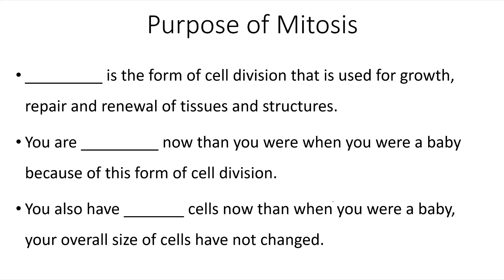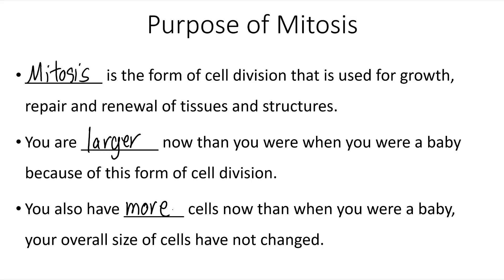So let's talk about cell division. The purpose of mitosis: mitosis is the form of cell division that is used for growth and repair and renewal of tissues and structures. You are larger now than you were when you were a baby because of this form of cell division. You also have more cells now than when you were a baby. The overall size of your cells have not changed as you've gotten older and matured and developed — you simply have more cells now.